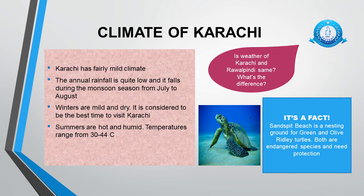Climate of Karachi — Karachi has a fairly mild climate, which means it does not have extreme weather conditions. The annual rainfall is quite low and it falls during the monsoon season from July to August, which is considered to be the best time to visit Karachi. Summers from April to August are hot and humid, with temperatures ranging from 30 to 44 degrees centigrade. Winters in Karachi are mild and dry, but here in Rawalpindi winters are very cold and wet. The annual rainfall in Karachi is quite low but in Rawalpindi the rainfall is high.